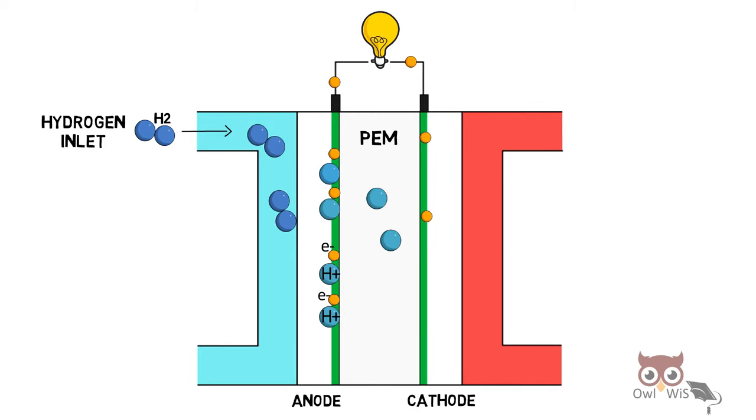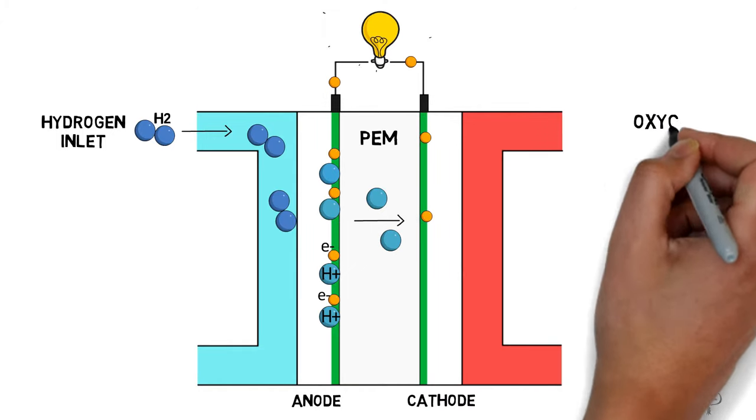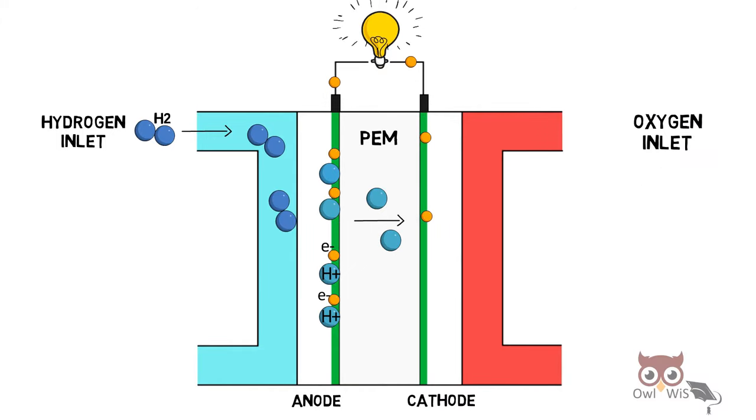Also, at the cathode end, the hydrogen protons move and cross the PEM layer.